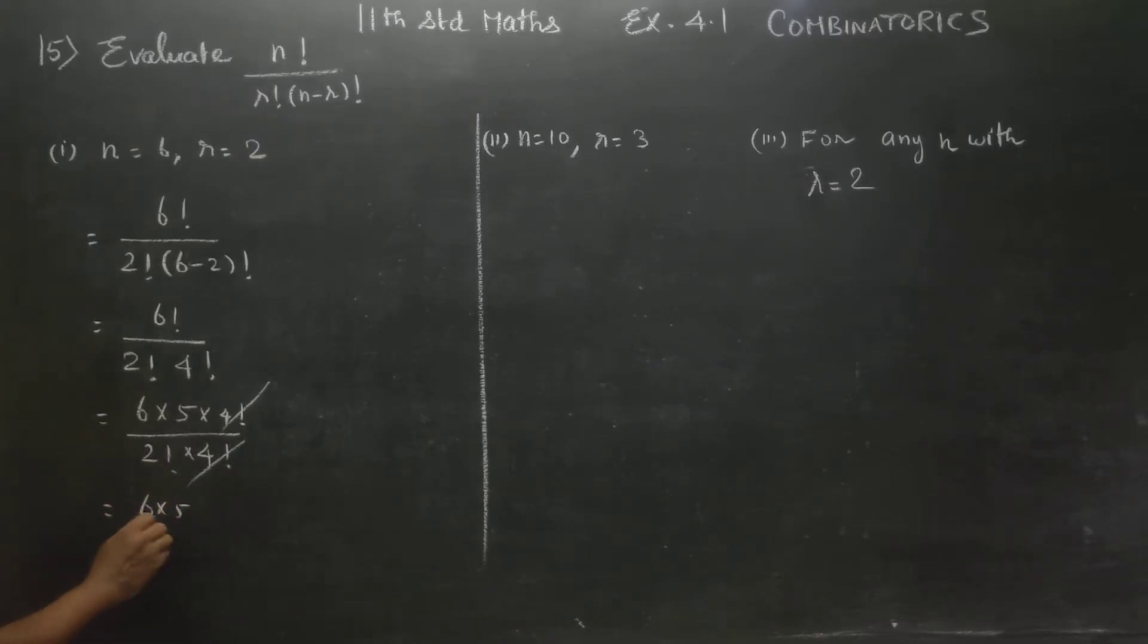6 into 5. 2 factorial will open. 2 factorial will open. 2 into 1. I will cancel three times. The answer is 3 wise. 15 is your final answer.